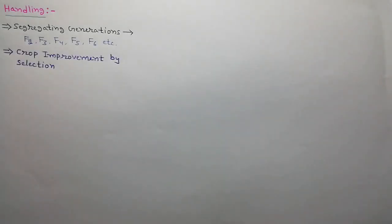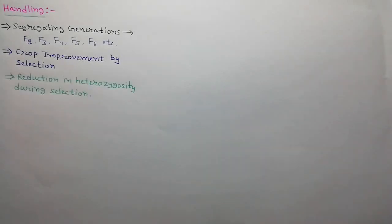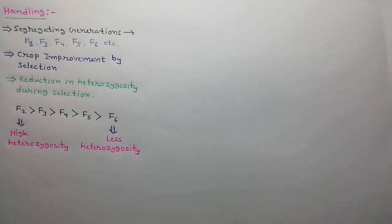Segregating generations have genetic variability. The process of crop improvement by selection from these segregating generations is known as handling. As the selection process proceeds, heterozygosity continuously decreases in these segregating generations. F2 generation has high heterozygosity while F6 generation has less heterozygosity, about 3%.